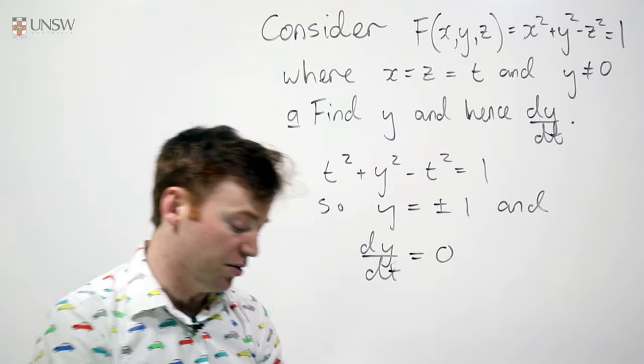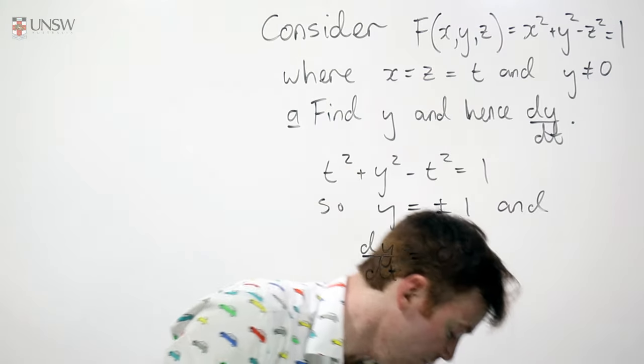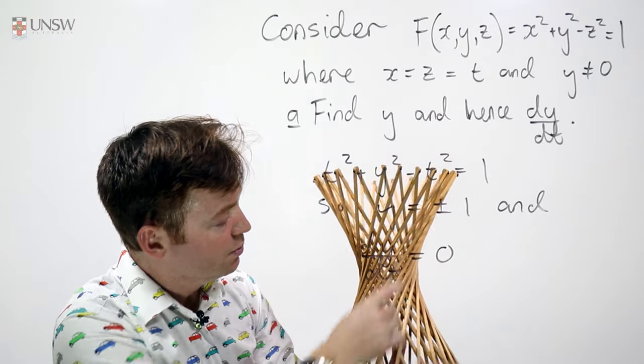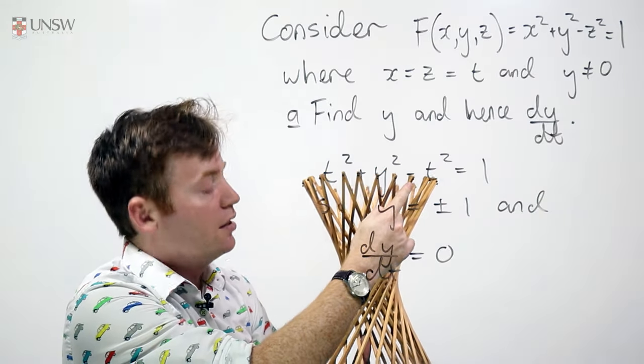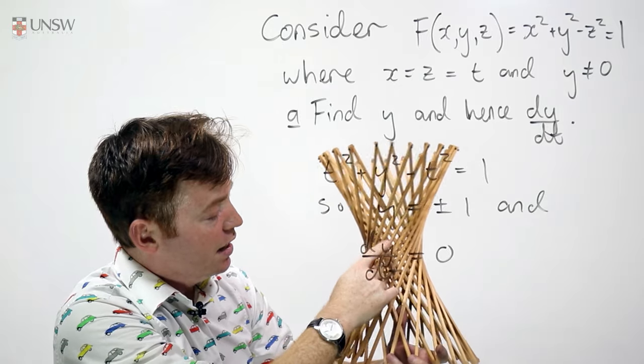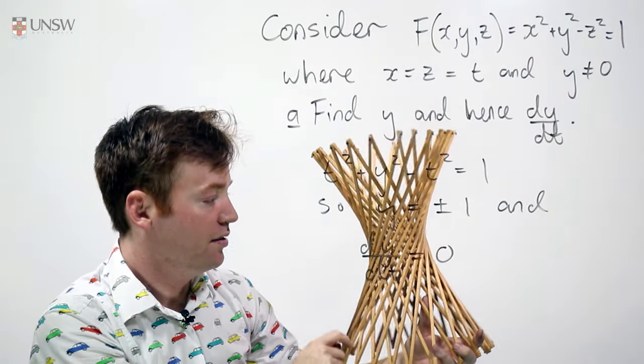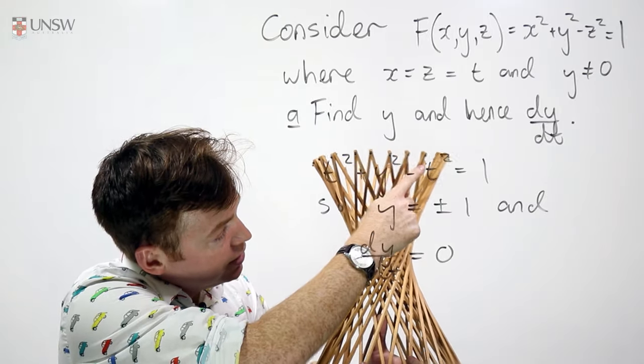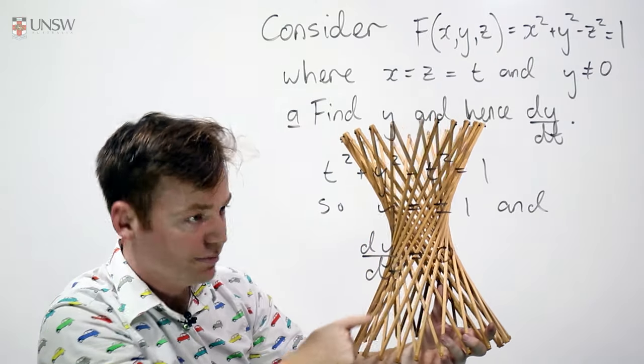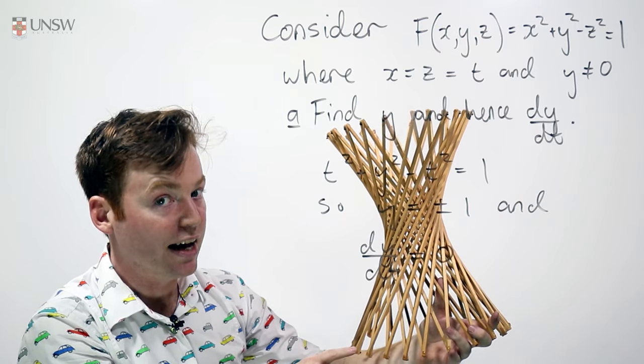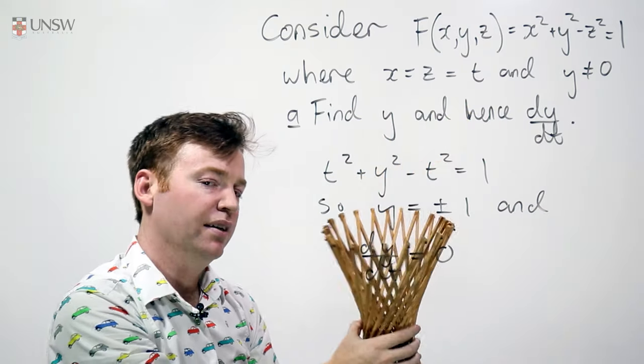So this line that we're tracing along the hyperboloid is the line passing through the point (0, 1, 0), and whose direction is (1, 0, 1). So that gives me a line. This line here. It's on the hyperboloid and it's a line. How interesting.